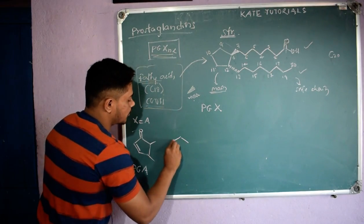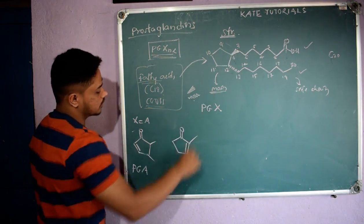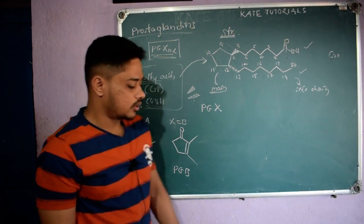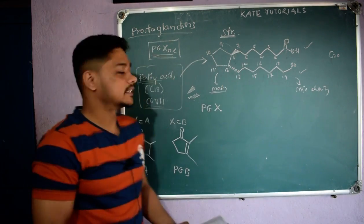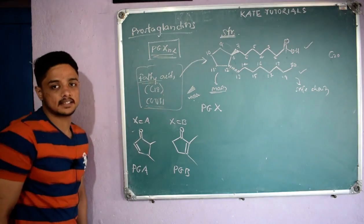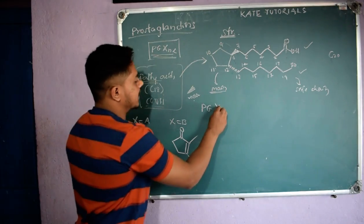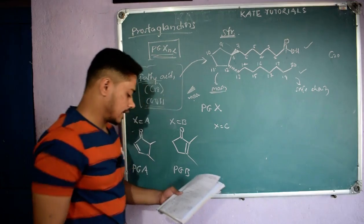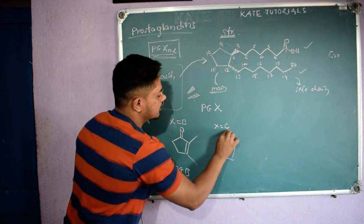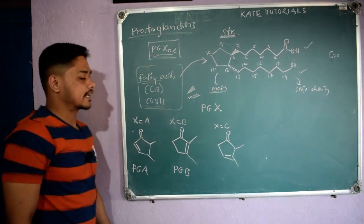If X equals B, the cyclopentane ring has a ketone group but the pi bond has moved to the other side compared to PGA. If X equals C, the pi bond is now on the bottom side of the cyclopentane ring with the ketone. So you need to remember the ring structure to correctly name the prostaglandin — whether it is PGA, PGB, or PGC.